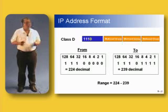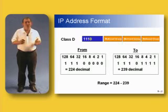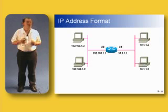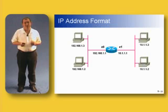This is helpful to us. It means that whenever we see an IP address, we can look at the first number — the first octet — and tell whether it's a class A, class B, class C, or class D address.